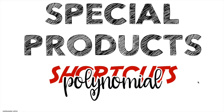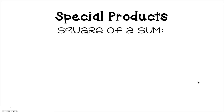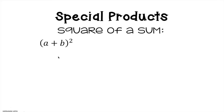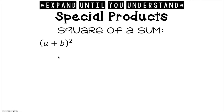We're going to talk about the three different types of special products. The first type is a square of a sum. The square of a sum is when you have a binomial and you're squaring it. Now what we're going to do is pretend we don't know the shortcut. When you see something like this, you go back to our exponent properties and end up expanding it until you understand.